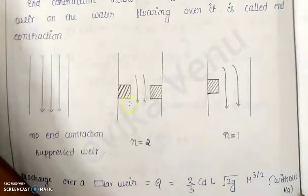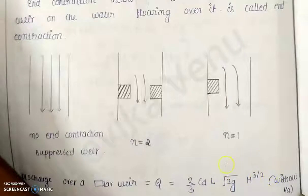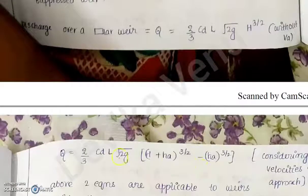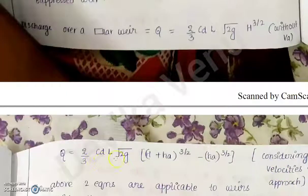For a rectangular weir, the discharge without considering velocity of approach is Q = (2/3) × C_D × L × √(2G) × H^(3/2). When considering the velocity of approach, it becomes Q = (2/3) × C_D × L × √(2G) × [(H + H_A)^(3/2) − H_A^(3/2)].